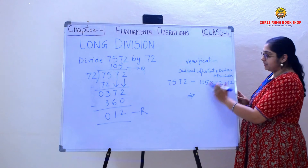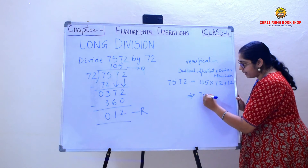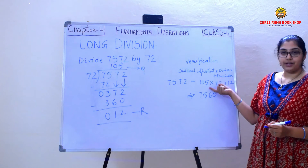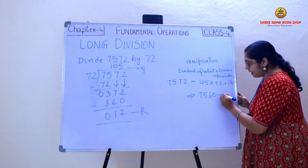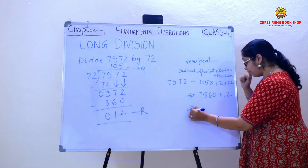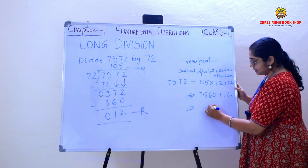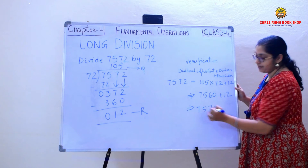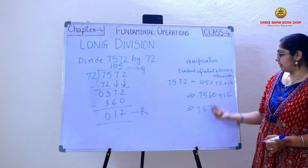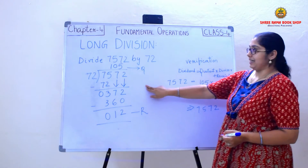When I multiply the quotient and the divisor, which is 105 into 72, I get 7560. And I am adding the remainder which is 12. So when I add this, I get 0 plus 2 which is 2, 6 plus 1 is 7, and 5 and 7. So here I got the dividend again. Thus my long division is correct.